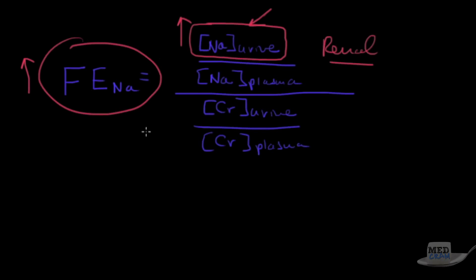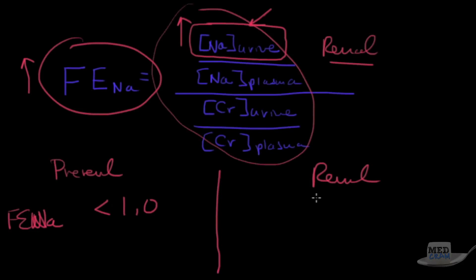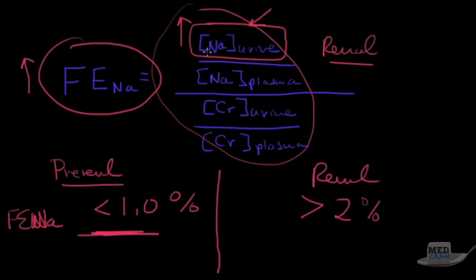In pre-renal, the FENa is usually less than 1%, because urine sodium is low — the kidney is reabsorbing as much salt and water as possible. In renal failure, the FENa is usually greater than 2%, because the tubule cells are not doing their job and sodium spills into the urine.